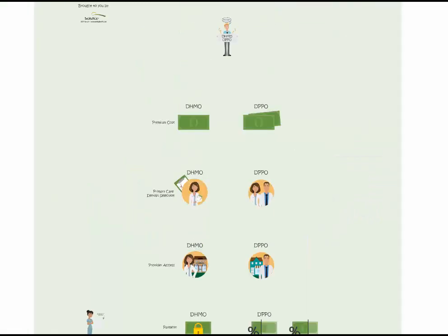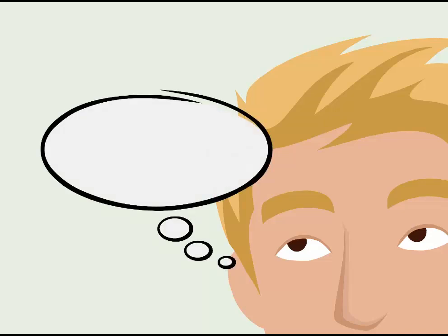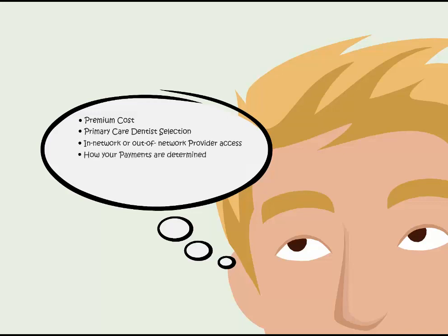To recap, differences between a DHMO and DPPO plan center around seven key factors: premium cost, primary care dentist selection, in-network or out-of-network provider access, how your payments are determined, filing claims, and the existence of deductibles and maximums. Now that you know the main differences between these two plans, picking the right dental plan will be a breeze.